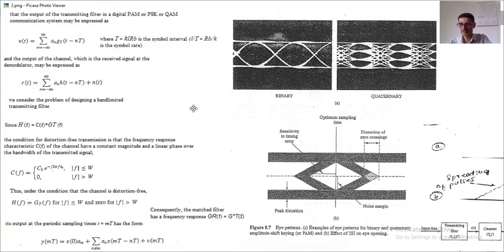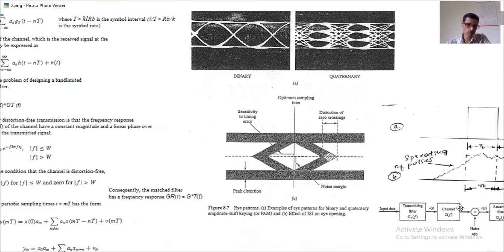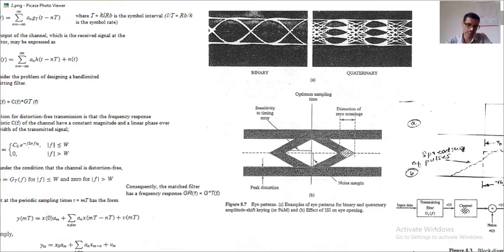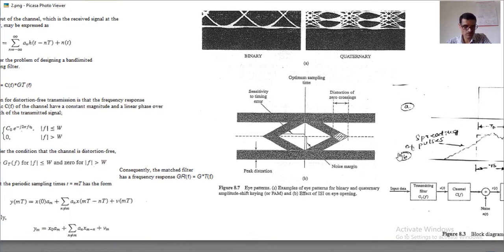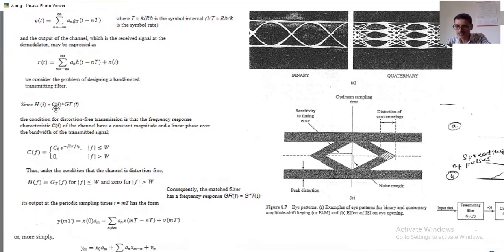We assume there is no distortion in the channel — a distortionless channel. H(F) is the output of the channel, which in the frequency domain is multiplication: H(F) = C(F) convolved with GT(F). The condition for distortionless transmission is that C(F), the channel response, should have a magnitude equal to 1 — a constant magnitude and linear phase over the bandwidth of the transmitted signal.